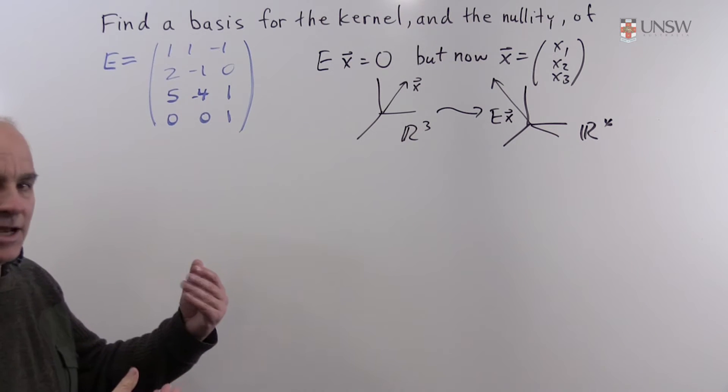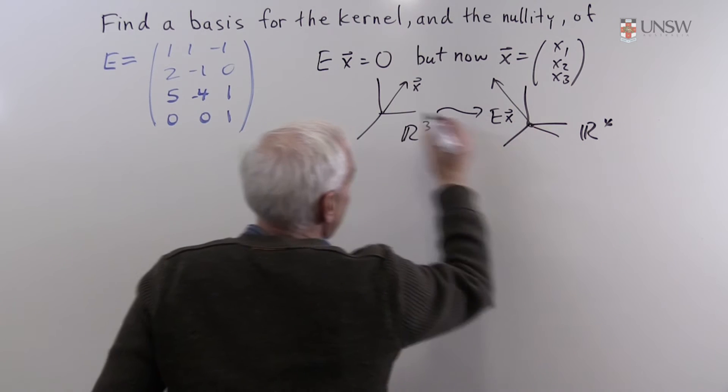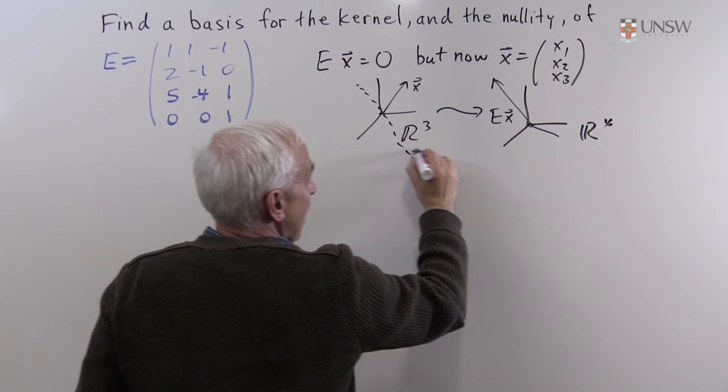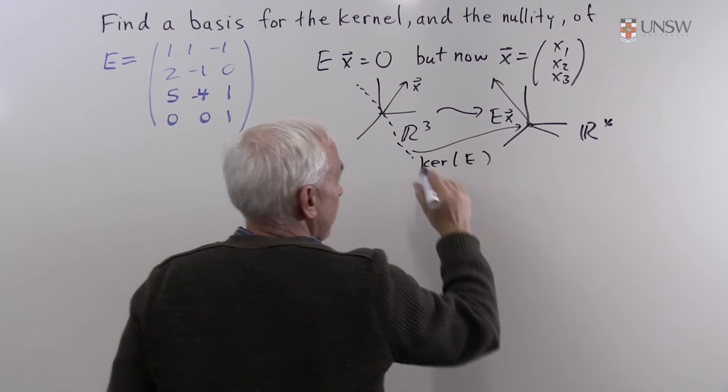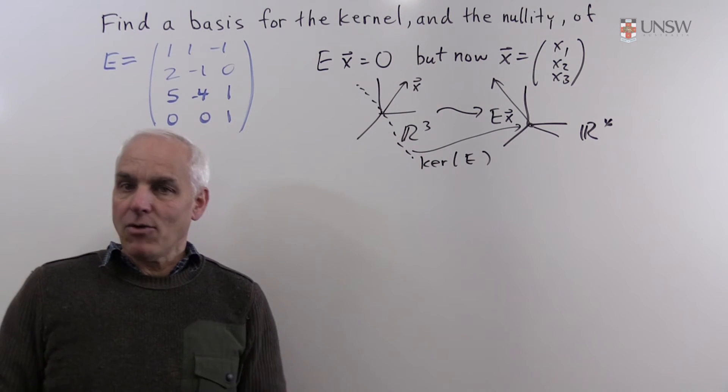And again, we're interested in vectors over here which get sent to 0. Maybe it's a line, let's say. Might be a line of vectors, the kernel of E, those vectors in 3-dimensional space that get sent to 0 under this transformation.